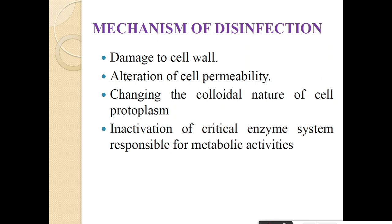Next point is the mechanism of disinfection - how this disinfection process takes place. There are four actions that take place whenever we add the disinfectant into the water. First, it damages the cell wall of the microorganism or pathogen. Second, alteration of cell permeability - they alter the cell permeability and make them harmless. Third, changing the colloidal nature of the cell protoplasm - the disinfectant changes the colloidal nature of the bacteria cell protoplasm and makes them harmless. And fourth, the inactivation of the critical enzyme system which is responsible for the metabolic activity, and by that way they reduce and kill the pathogen and make the water harmless.